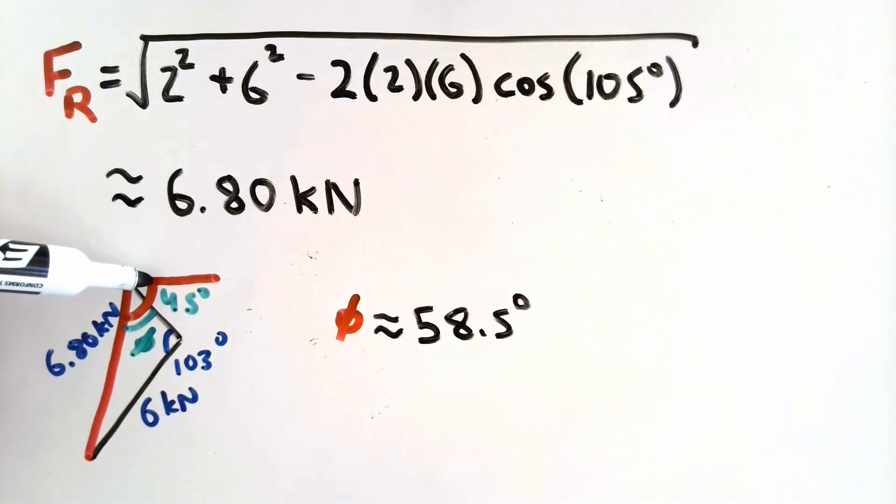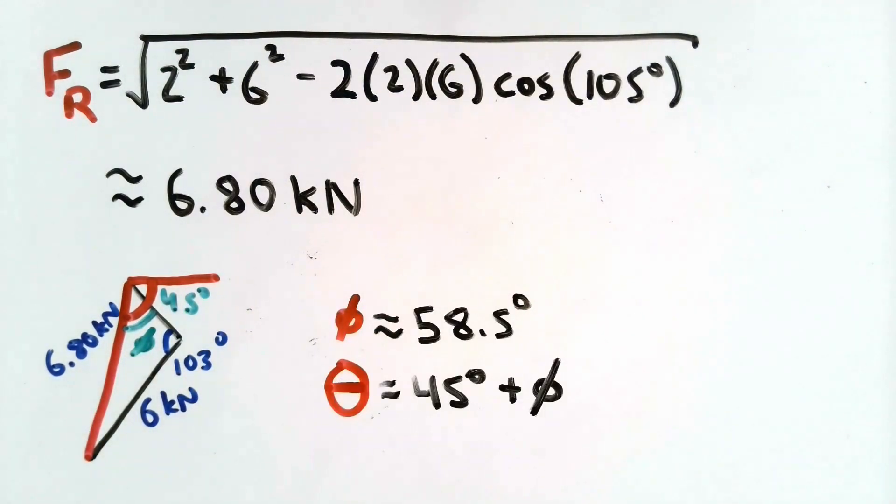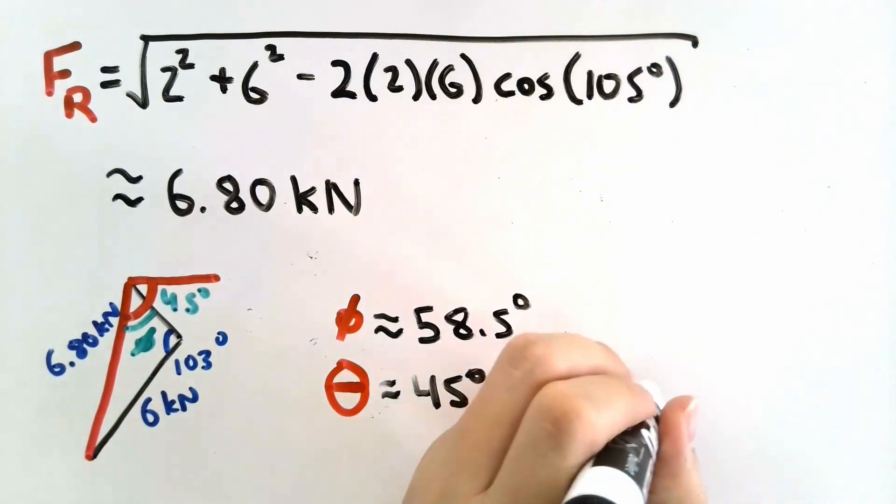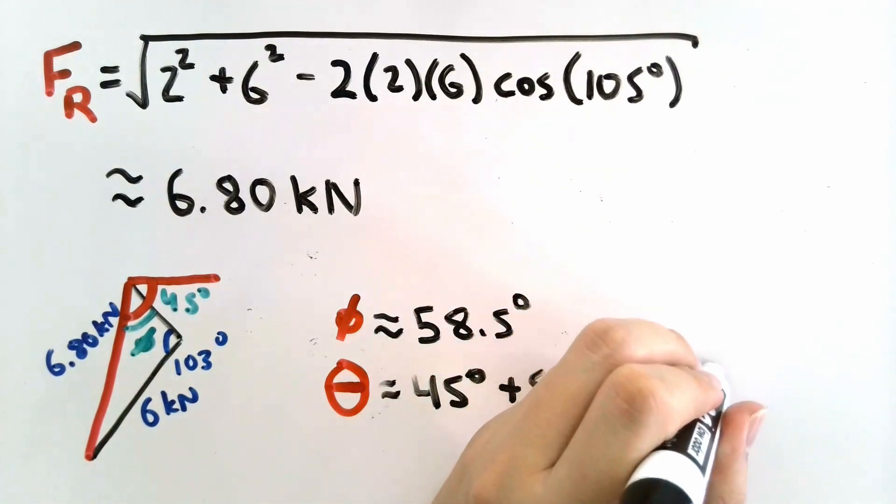We know that from the horizontal to the 2 kN vector, our angle is 45 degrees. And we know that from the 2 kN vector to my resultant force vector, my angle is 58.5 degrees. Therefore, our total angle measured from the horizontal will be 45 degrees plus phi. We know that phi is 58.5 degrees. And that gives us an angle of approximately 103 degrees.